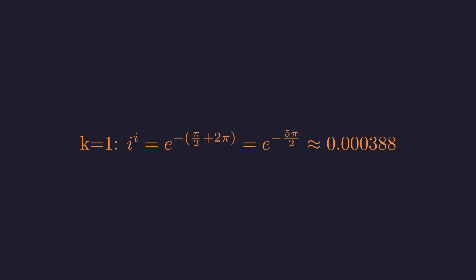When k equals 1, we get e to the negative 5 pi over 2, which is a tiny number, approximately 0.000388.